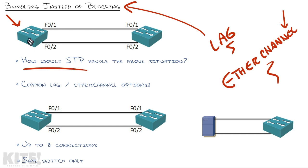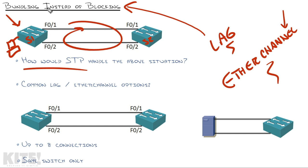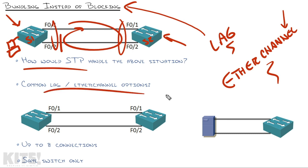Let me ask you: how would Spanning Tree Protocol handle this situation? We've got two switches — switch one and switch two — connected together with redundant cables on Fast Ethernet 0/1 and Fast Ethernet 0/2. Spanning Tree is going to identify a loop in this network, because if a computer sends a broadcast it will cycle around and destroy the network. So Spanning Tree will block one of those connections. That's a bummer, because you might want to use that bandwidth — and that's what LAG and EtherChannel is all about.